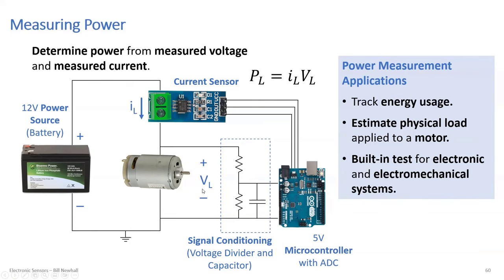We probably should have integrated this into your project. If you get ambitious, you can pick up one of these current sensors and measure the current from the DC-to-DC converter delivered to your board or motor. You can use a current sensor, multiply by voltage to get power in your microcontroller, and then if you run your propeller at a constant speed and load the motor down, you should see that power increase as the motor dissipates more power through friction.